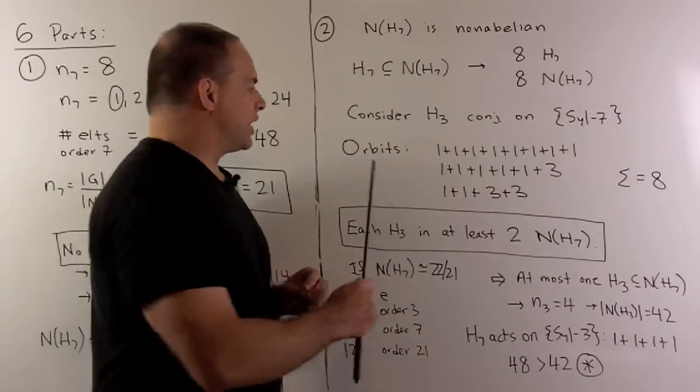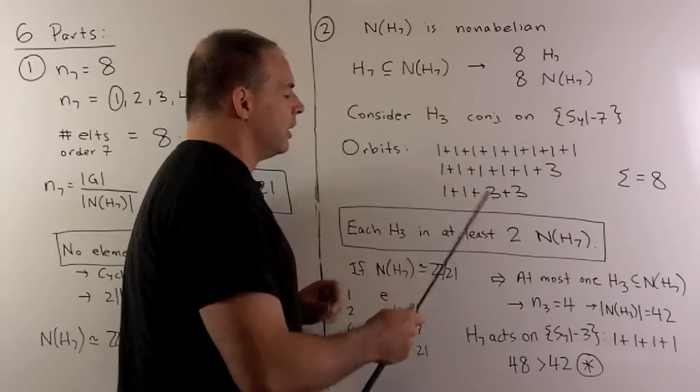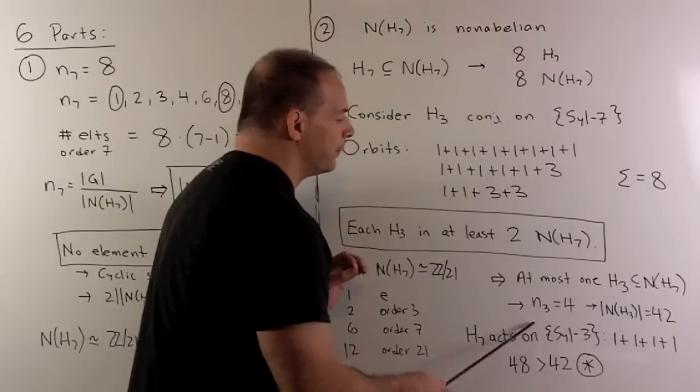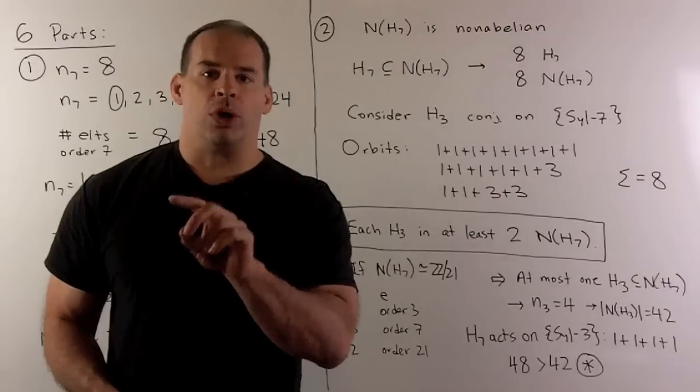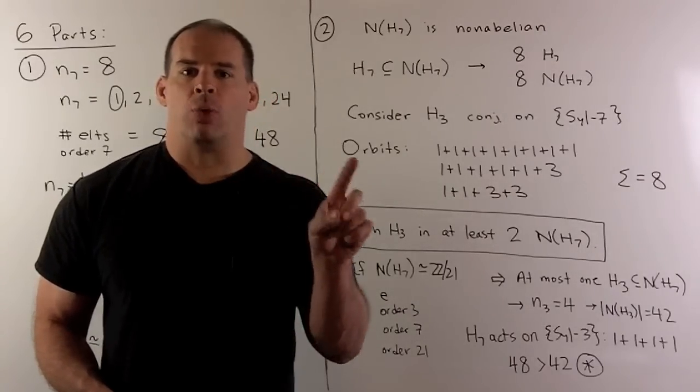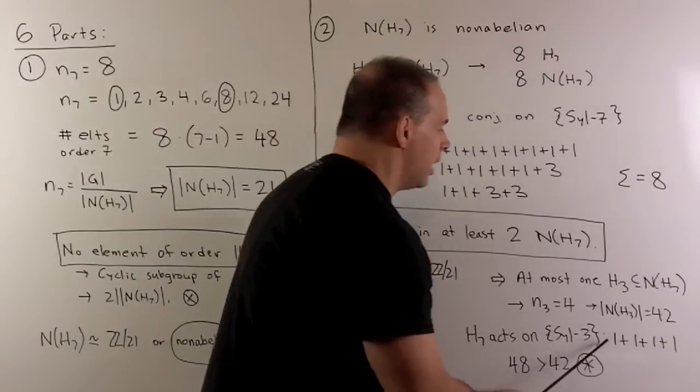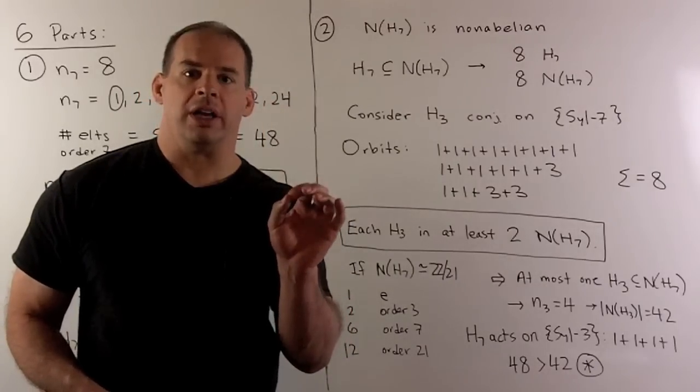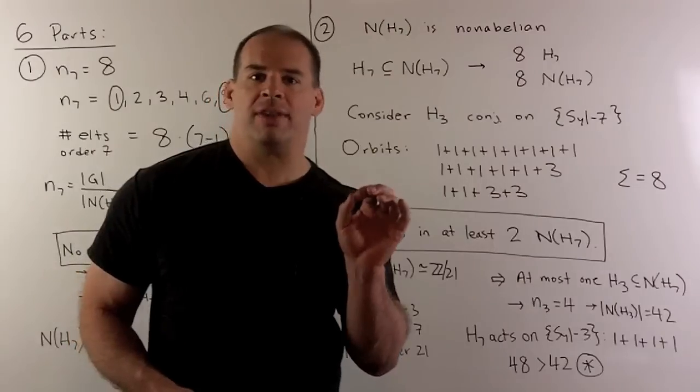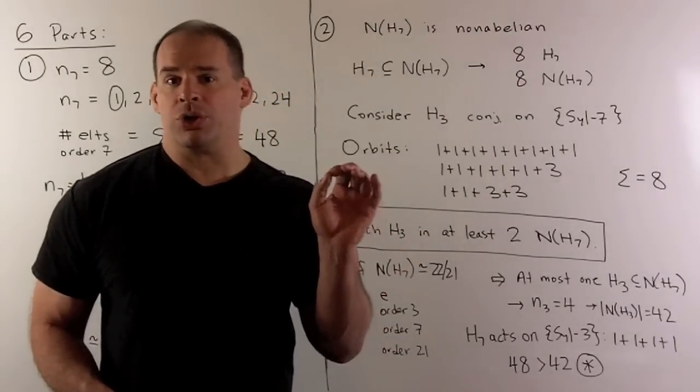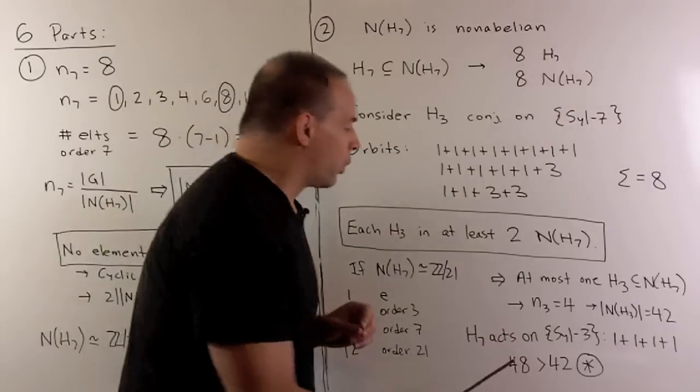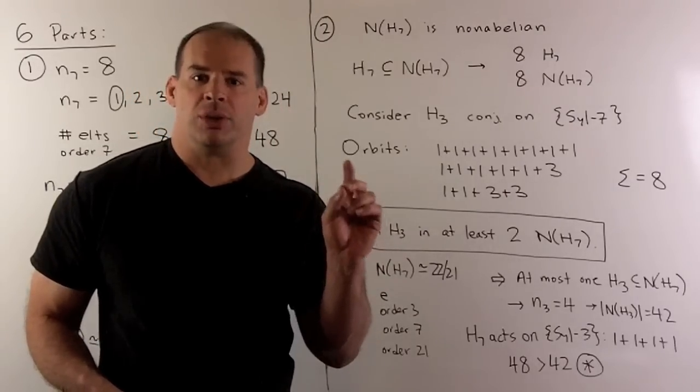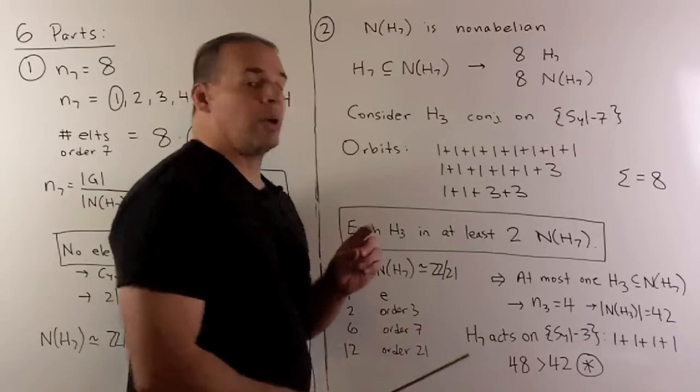Now, using our counting formula here, that means the order of the normalizer of a Sylow 3 is equal to 42. I want to do our same counting here, but let's reverse the direction. So, I have four Sylow 3s. I can let some Sylow 7 act on this set. The only way I can have orbits here, the orbits have to have one or seven elements. The only way we can partition four is going to be as a sum of ones. So, that means if I take any Sylow 7, it's going to be in the normalizer of our Sylow 3. Now, that means every element of order 7 is in that normalizer. How many elements of order 7 do we have? We have 48. 48 is greater than 42. And that's going to give us a contradiction. So, we can't have that the normalizer of our Sylow 7 is abelian. So, not abelian.